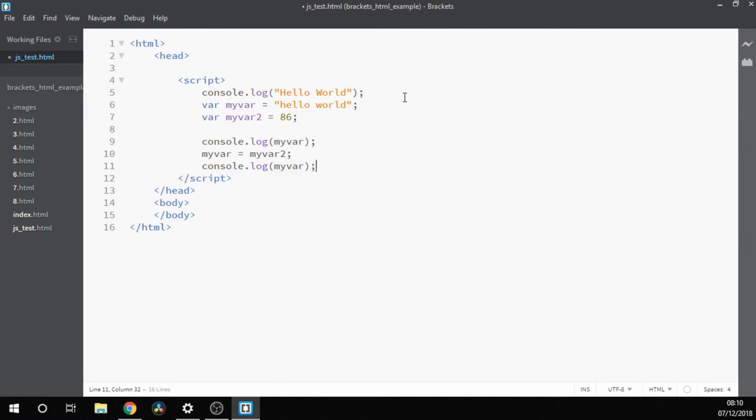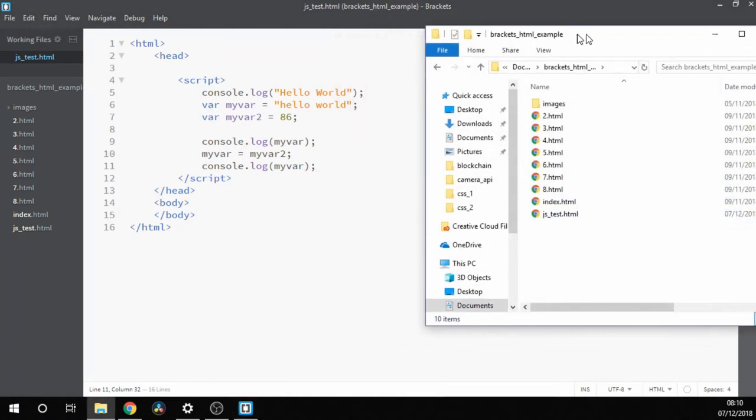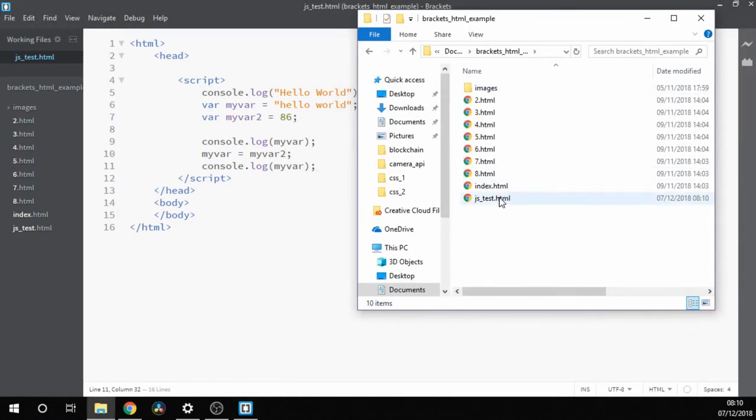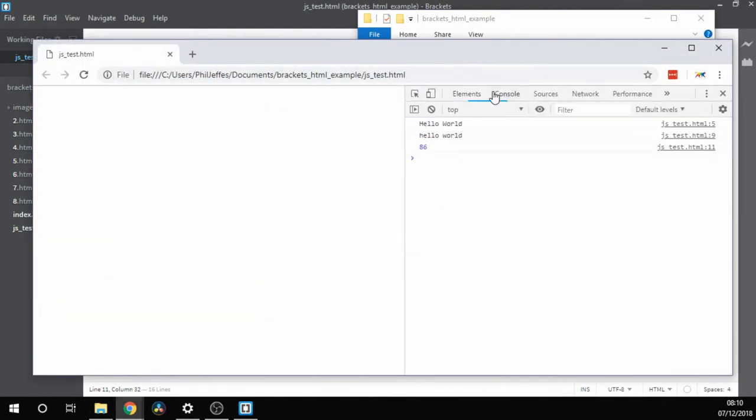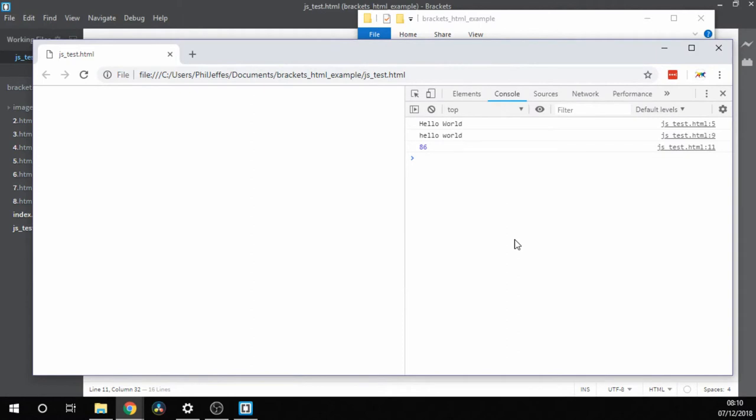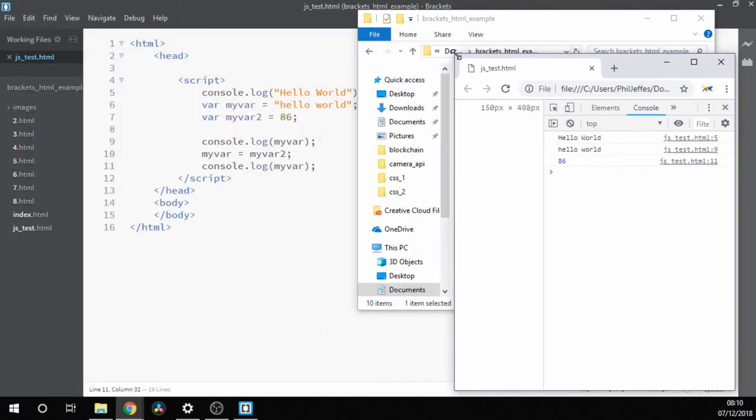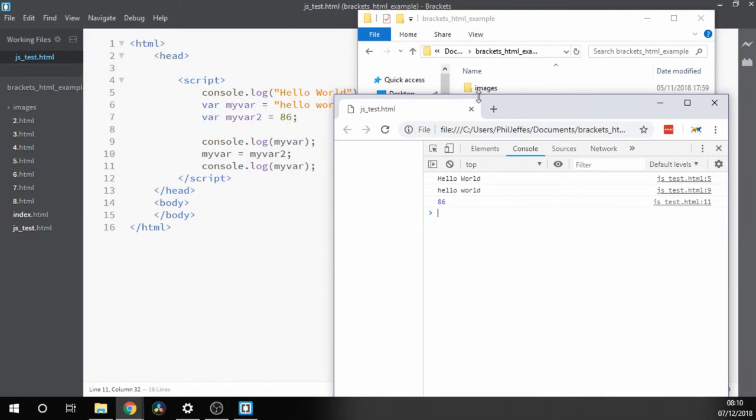And now when we run this program, save the file and go back to our folder, double click on the file itself and right click inspect and go to the console tab. And now we can see we've got our initial hello world that we've printed at the top. And then from where we printed myvar, we've got hello world with a lowercase h. And then we reassign the value and we print myvar again. And this time we end up with 86.